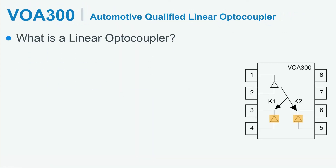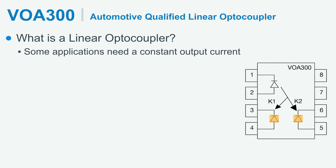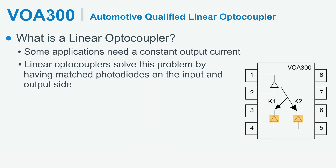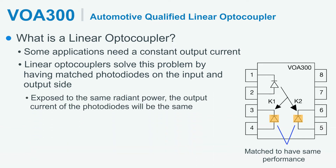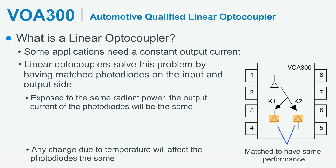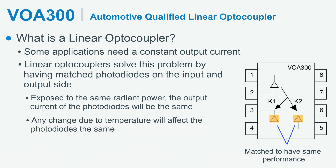Many applications need constant output current — they can't have changing output current due to drift in CTR. This is solved by having matched photodiodes on the input and output side. Basically, we have created a feedback loop on the input which tries to keep the emitter's output constant over temperature and time. So when exposed to the same radiant power, the output current of both photodiodes will be the same, and any changes due to temperature will affect the photodiodes the same way.